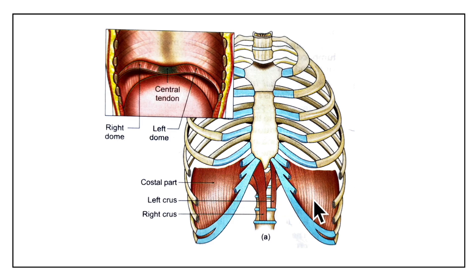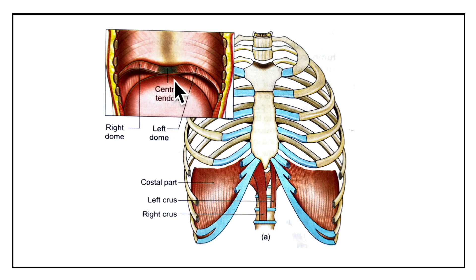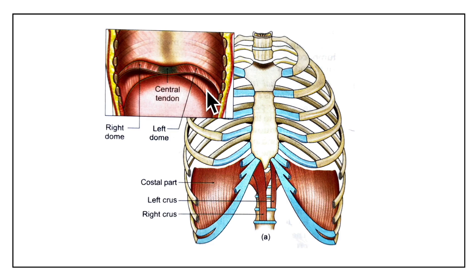The muscle fibers form the periphery of the partition and they arise from the circumference of the thoracic outlet and are inserted into a central tendon, as you can see right here. The diaphragm also gives passage to a number of structures between the thoracic and abdominal cavities that pass in both directions. Now let's look at the origin of the diaphragm.